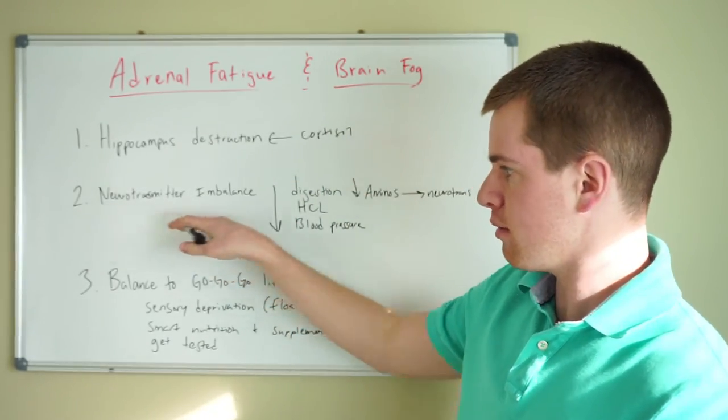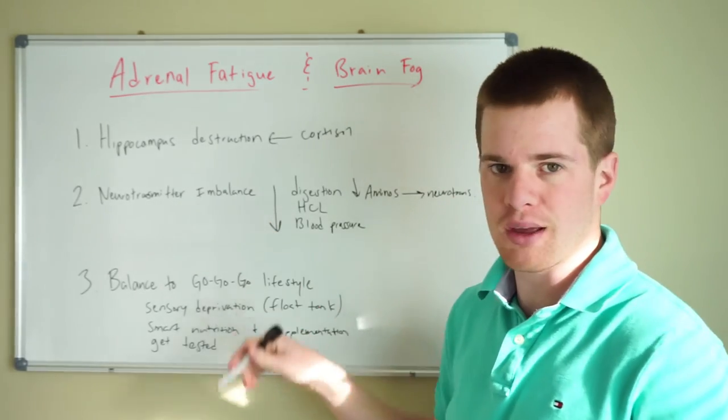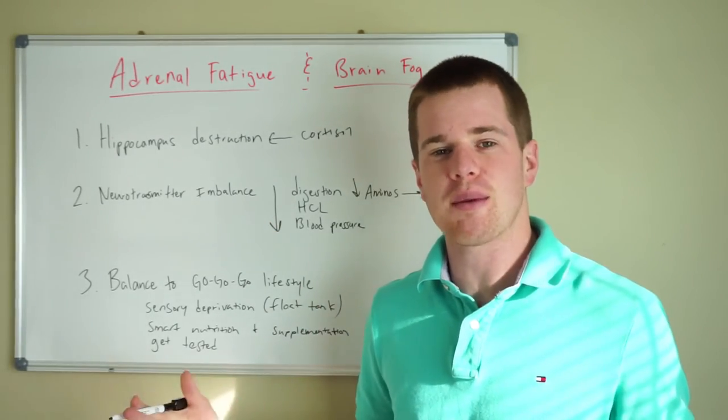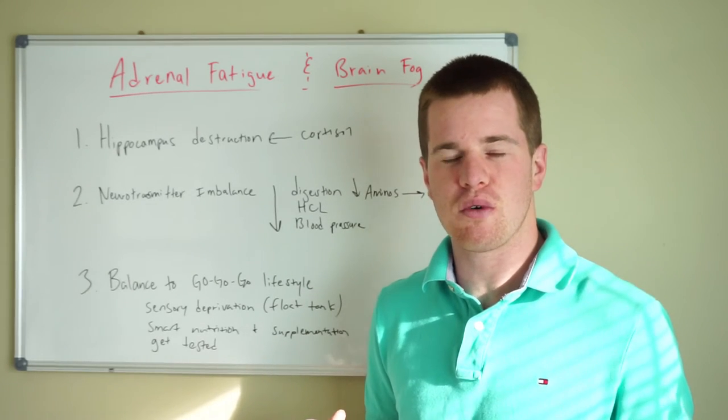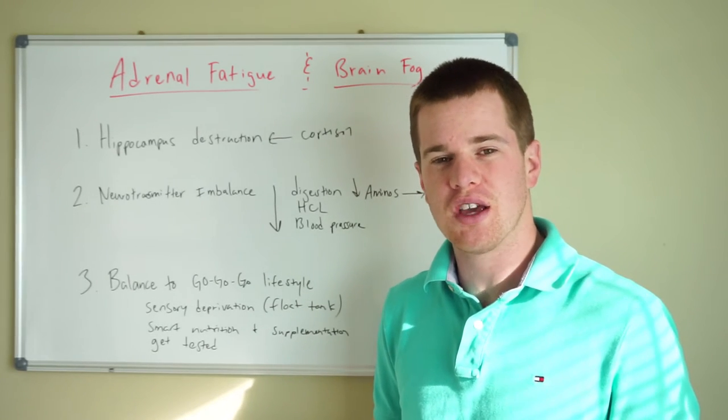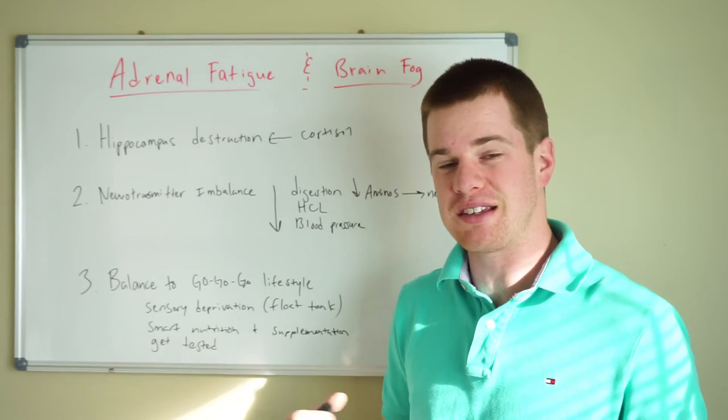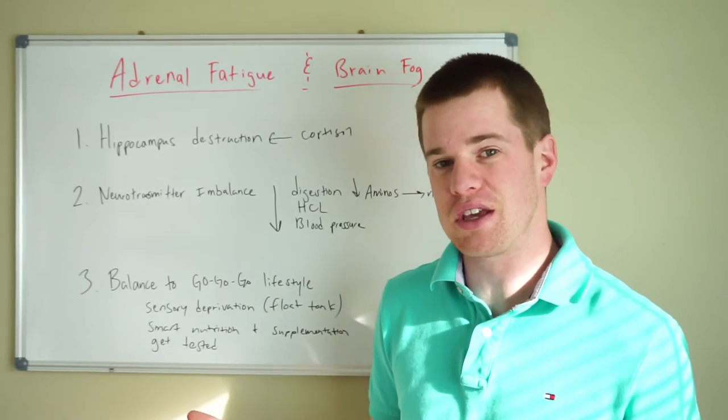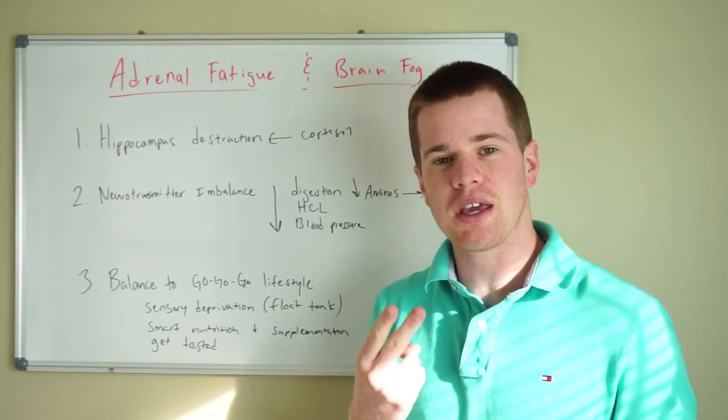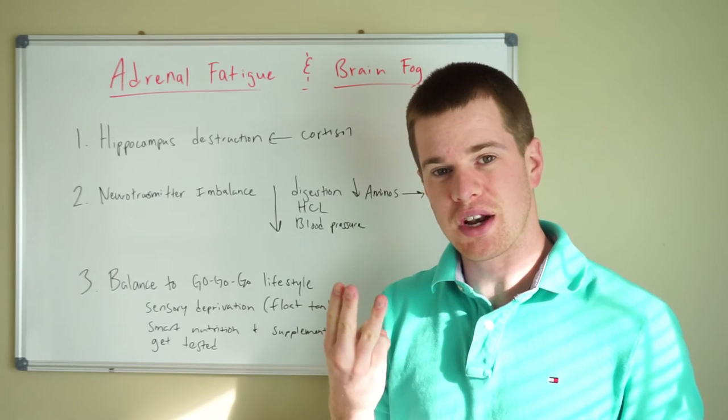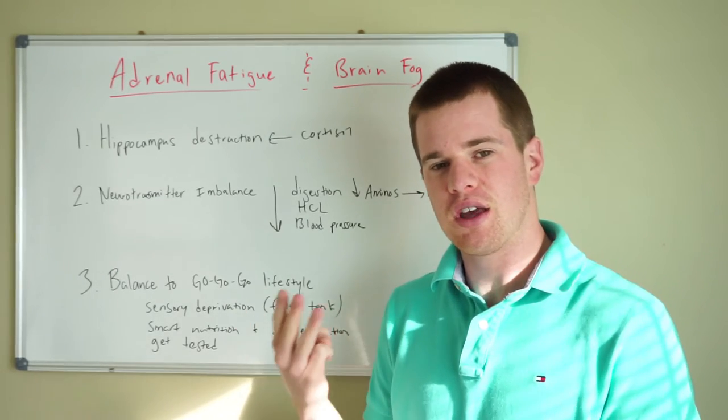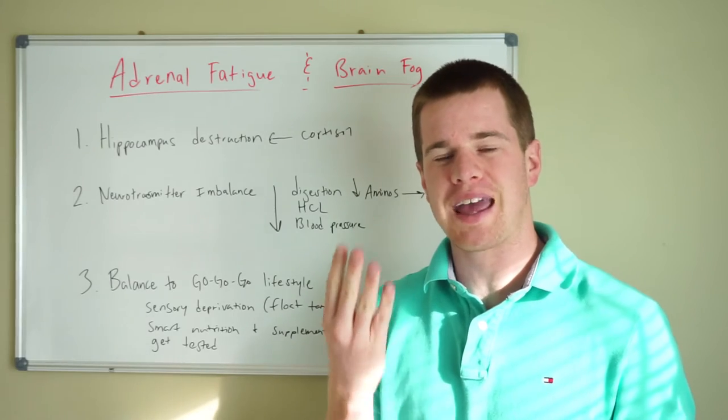Number two, the main issue is going to be neurotransmitter imbalance. Neurotransmitters are the brain chemicals. This is what allows you to feel emotions. There are over 100 neurotransmitters that have been identified. You probably mainly hear about serotonin, dopamine, epinephrine, adrenaline, these other types of hormones that can be considered as neurotransmitters. And then you hear about GABA, which is the brakes of the brain.